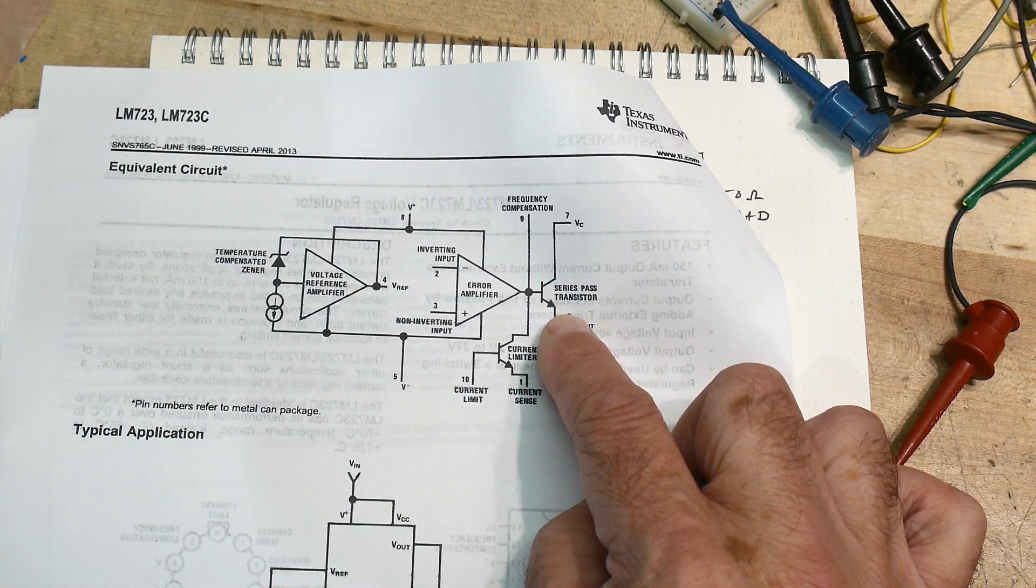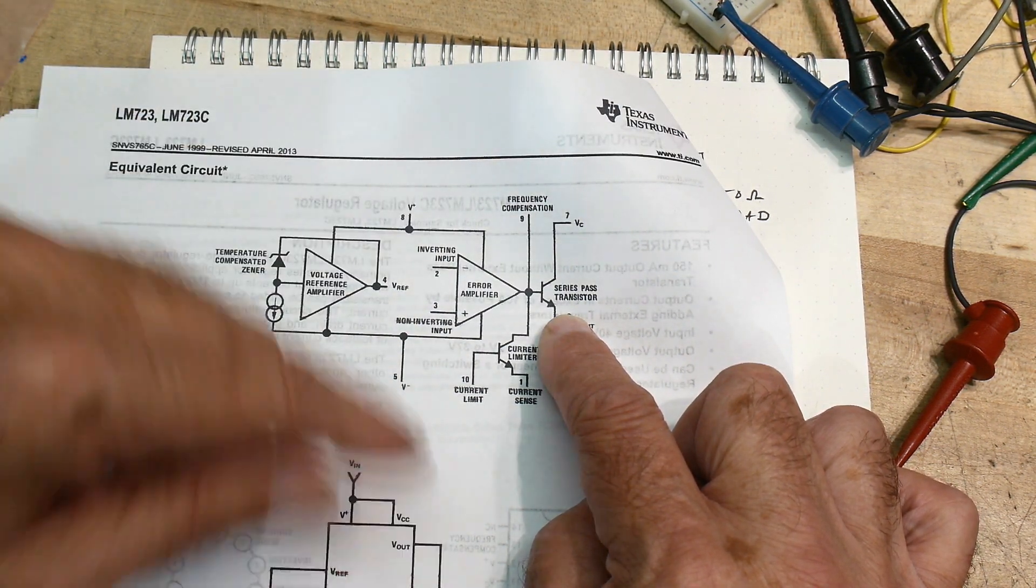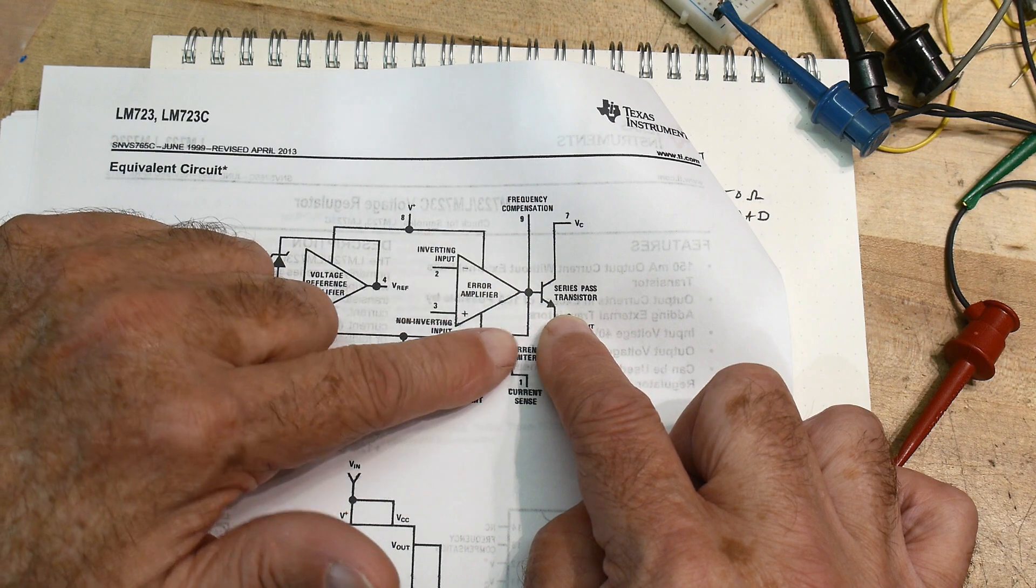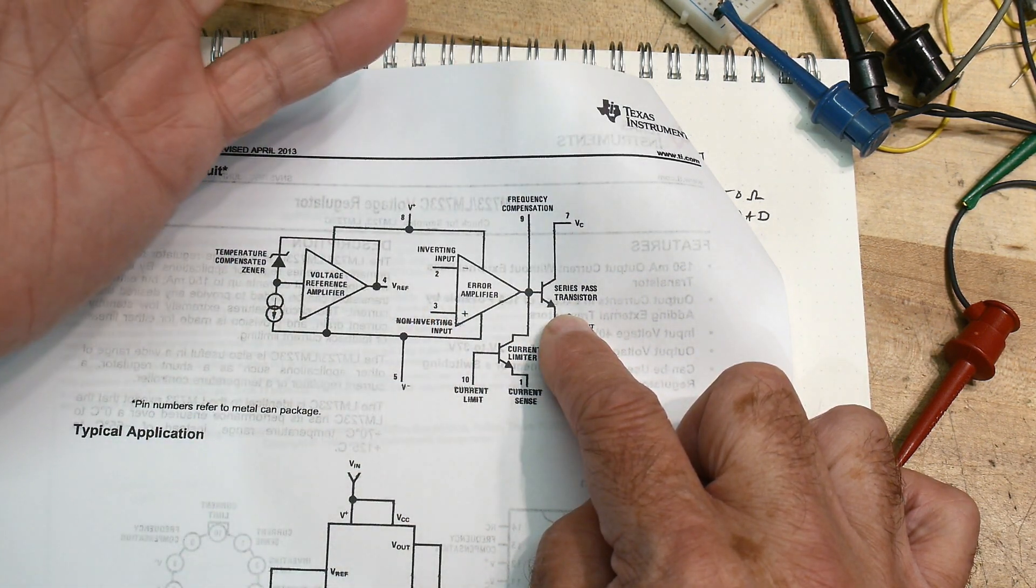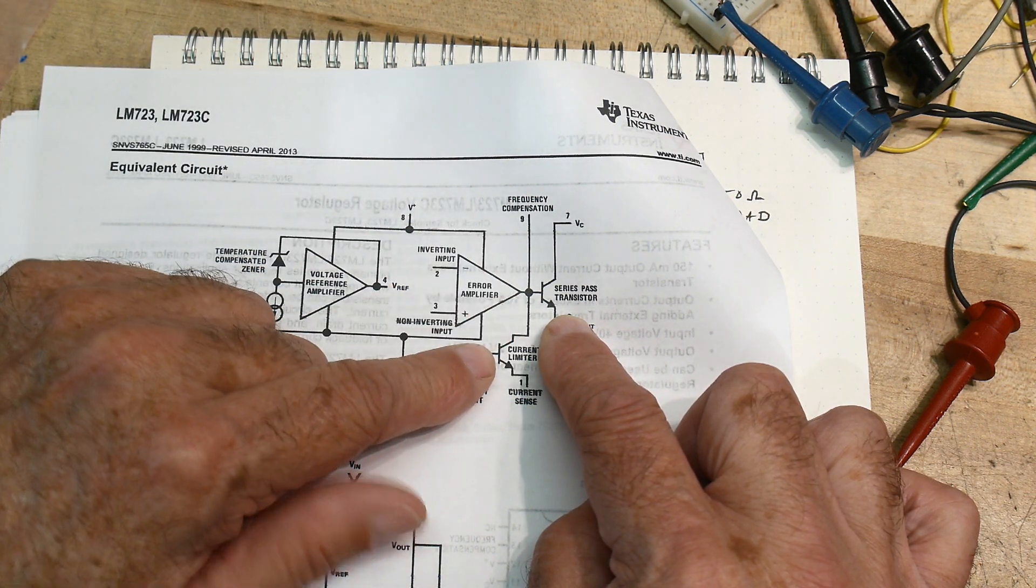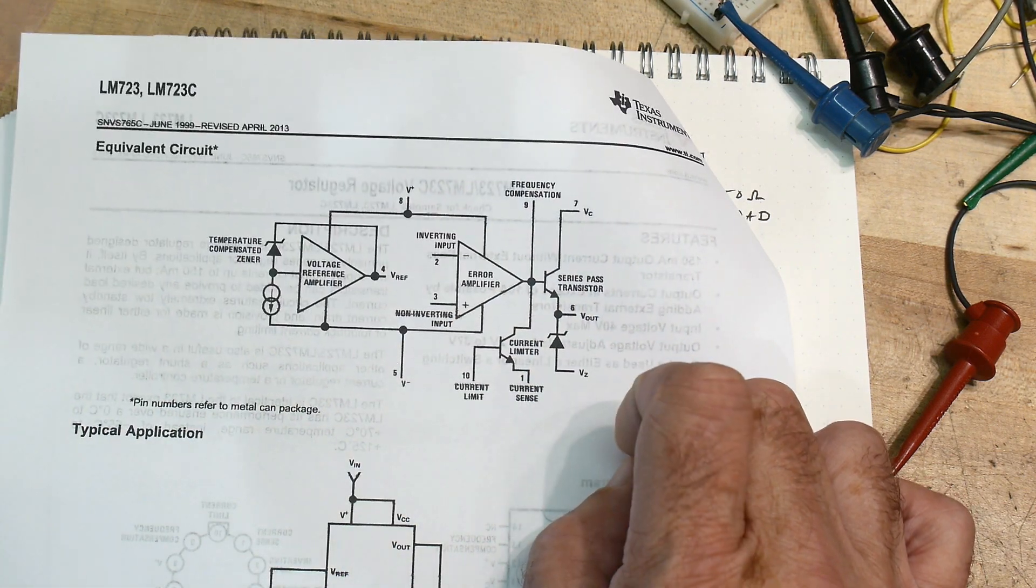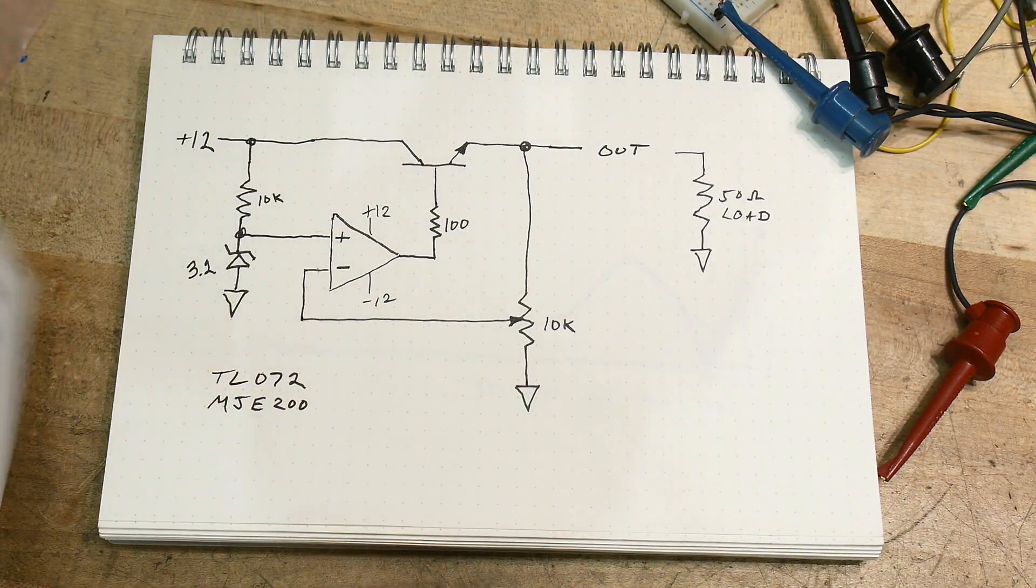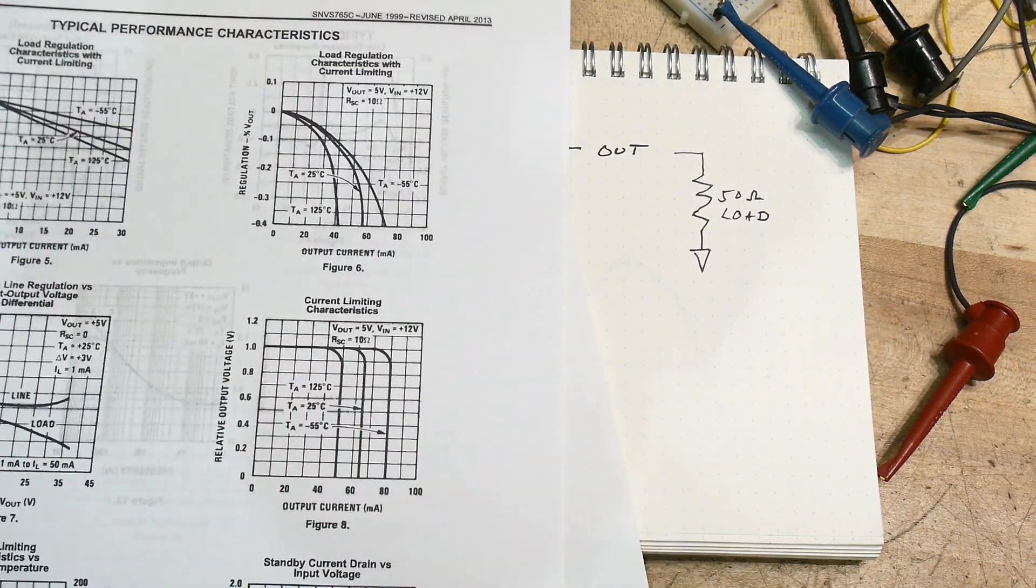Now this chip has one more thing that mine didn't, and that is this little transistor down here. What that transistor does is it reaches in here to the base and it can pull that base down, which basically says nope, you're not going to send out any more voltage, and it's used as a current limit.